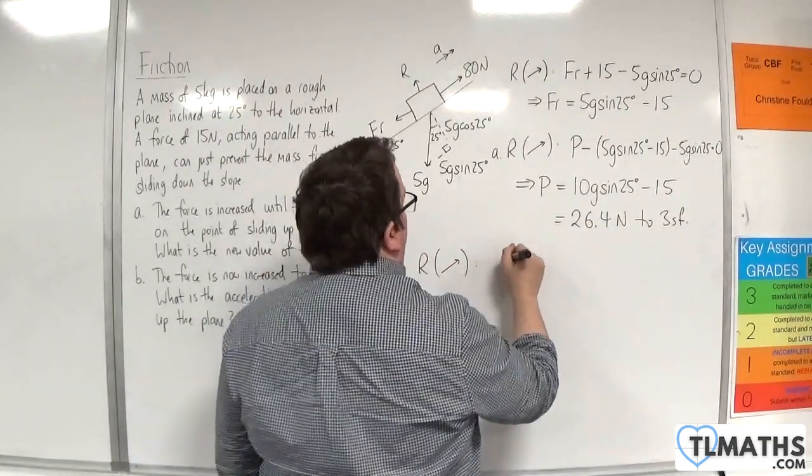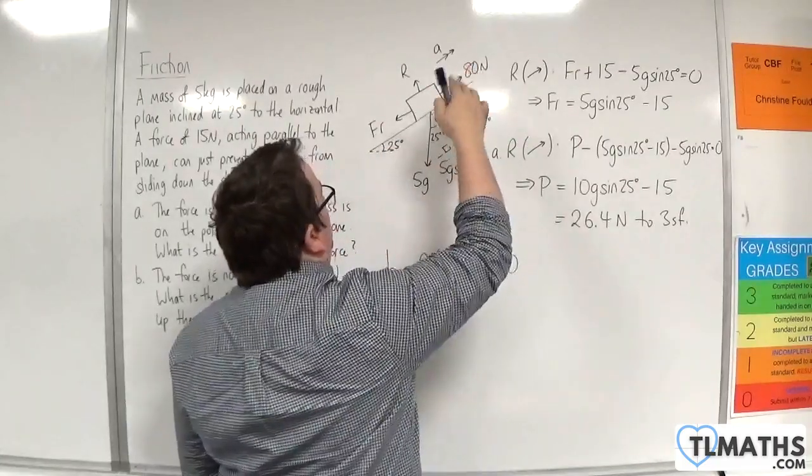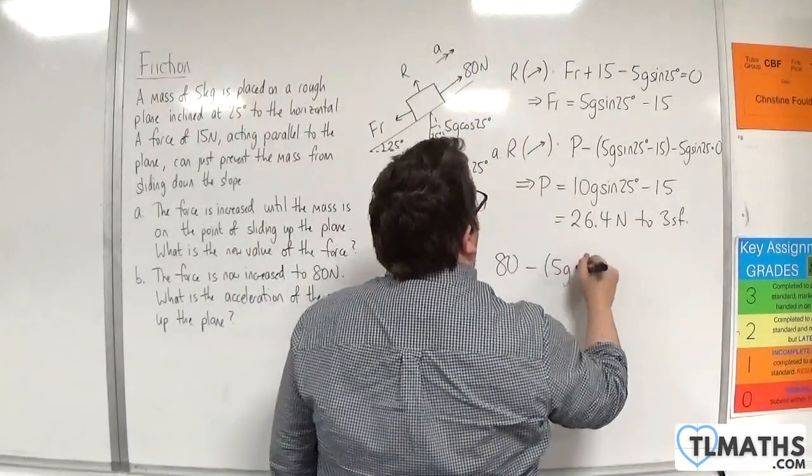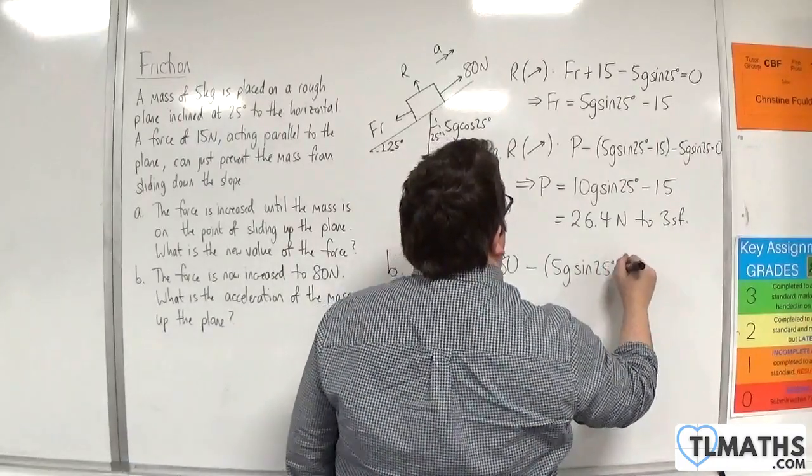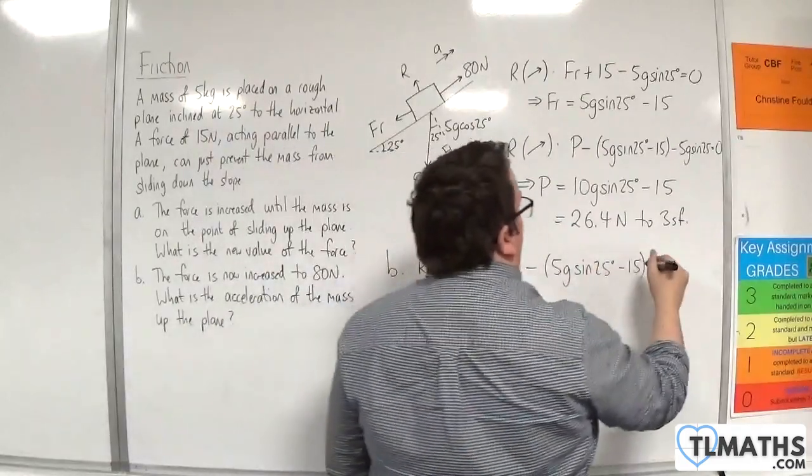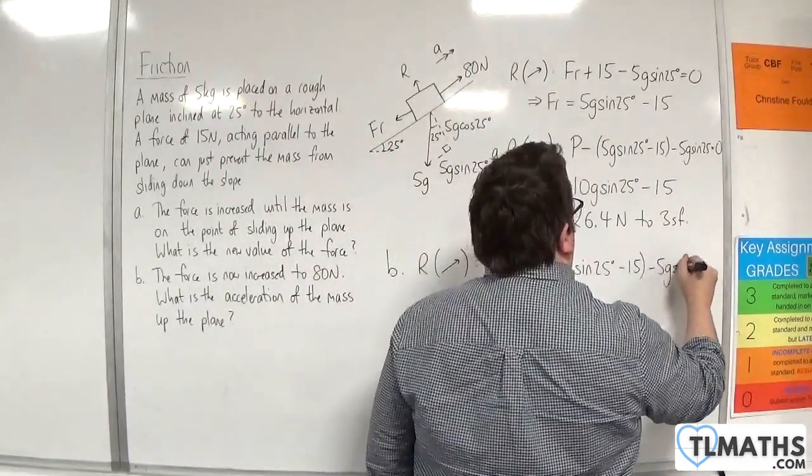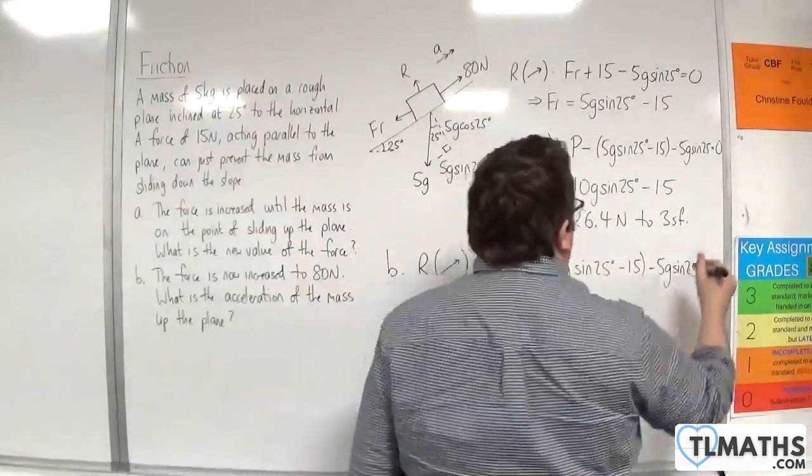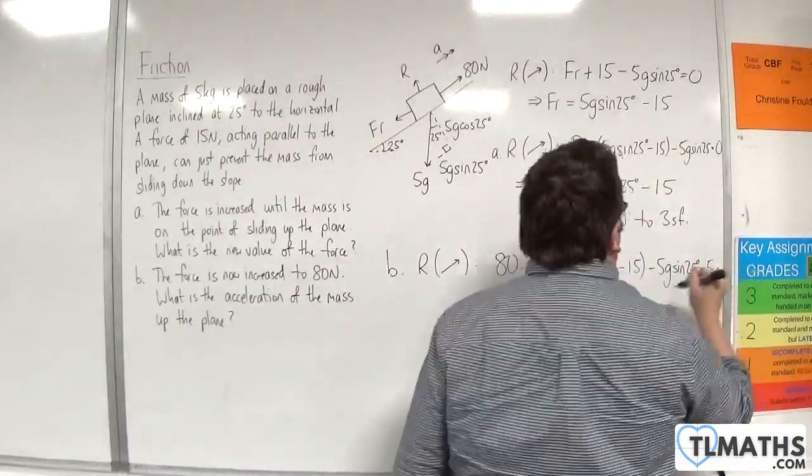We will have 80 newtons take away the friction, which was 5g sin of 25 take away 15, take away the 5g sin of 25. It's going to be equal to the mass, 5, times by the acceleration, A.